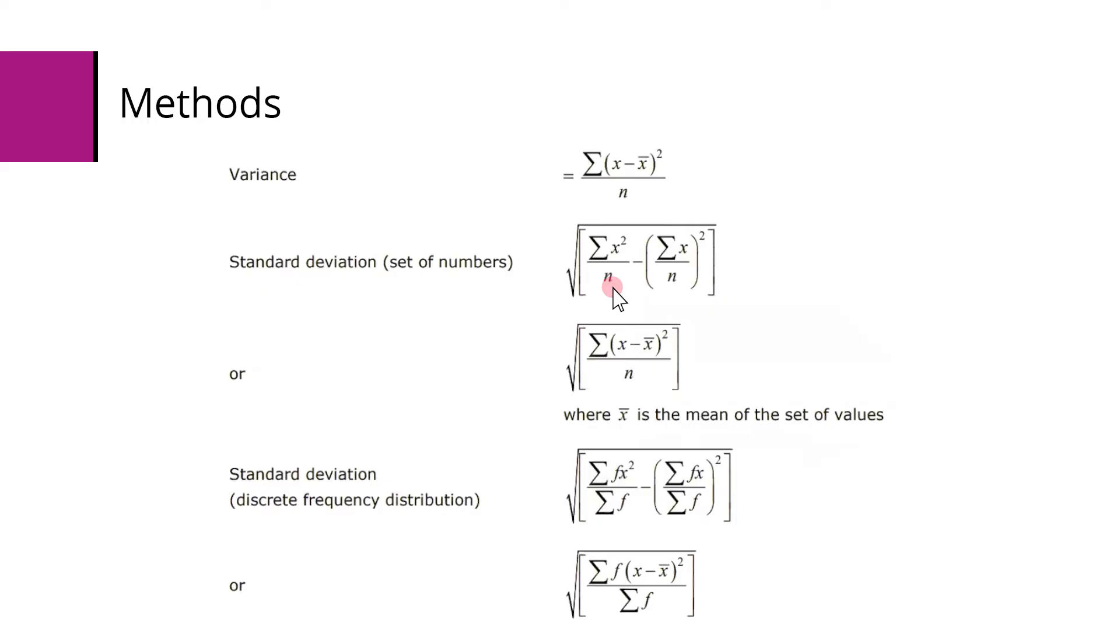So that's the mean of the squared values, and this is the sum of the x values divided by how many, so the mean, and then it's squared. This is sometimes remembered as being the mean of the squares minus the square of the mean, and you've just got to watch out that that is the variance. So you square root it to give you the standard deviation.